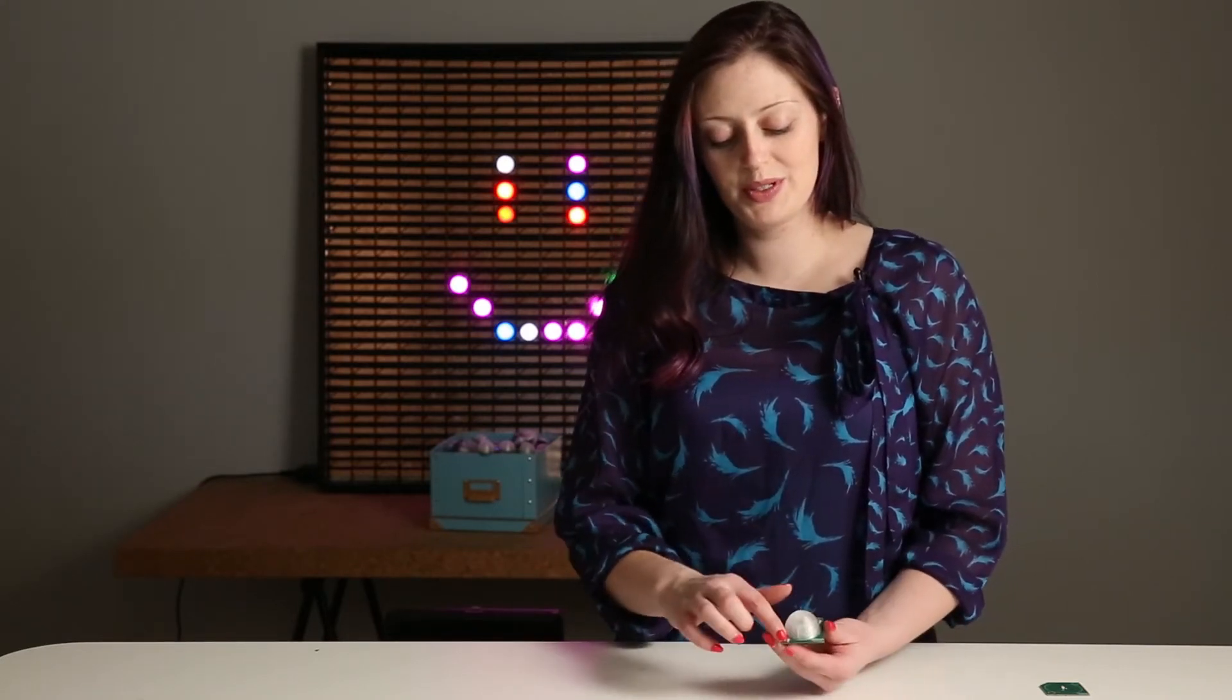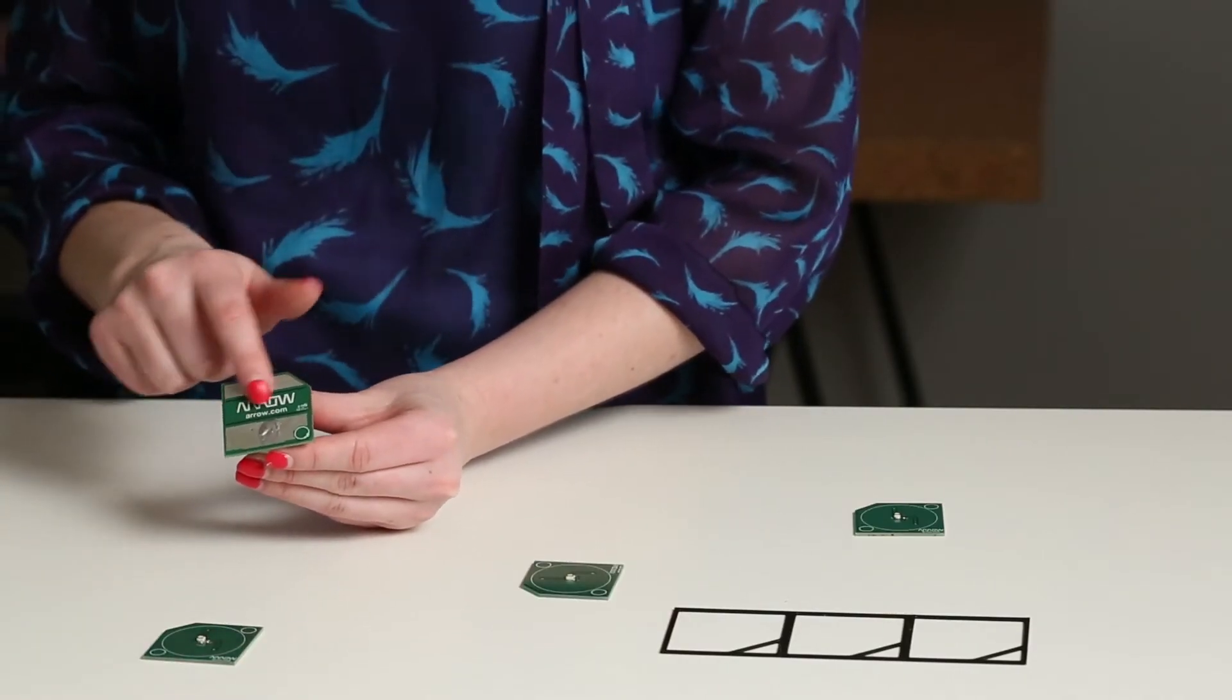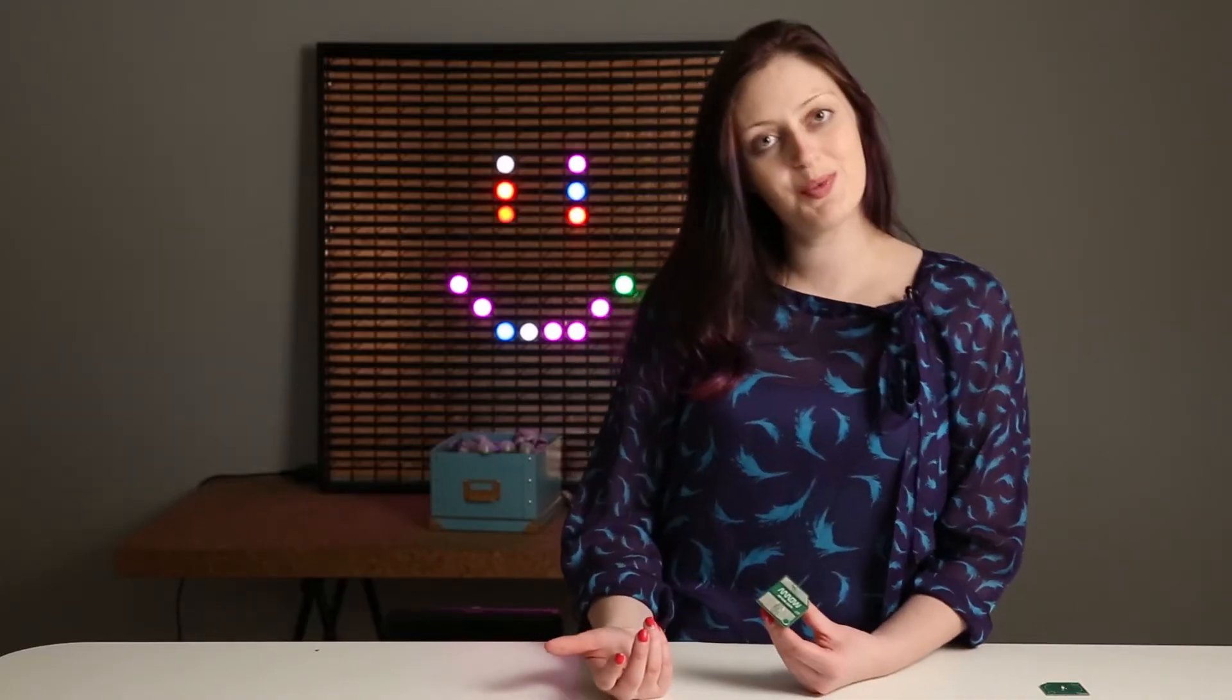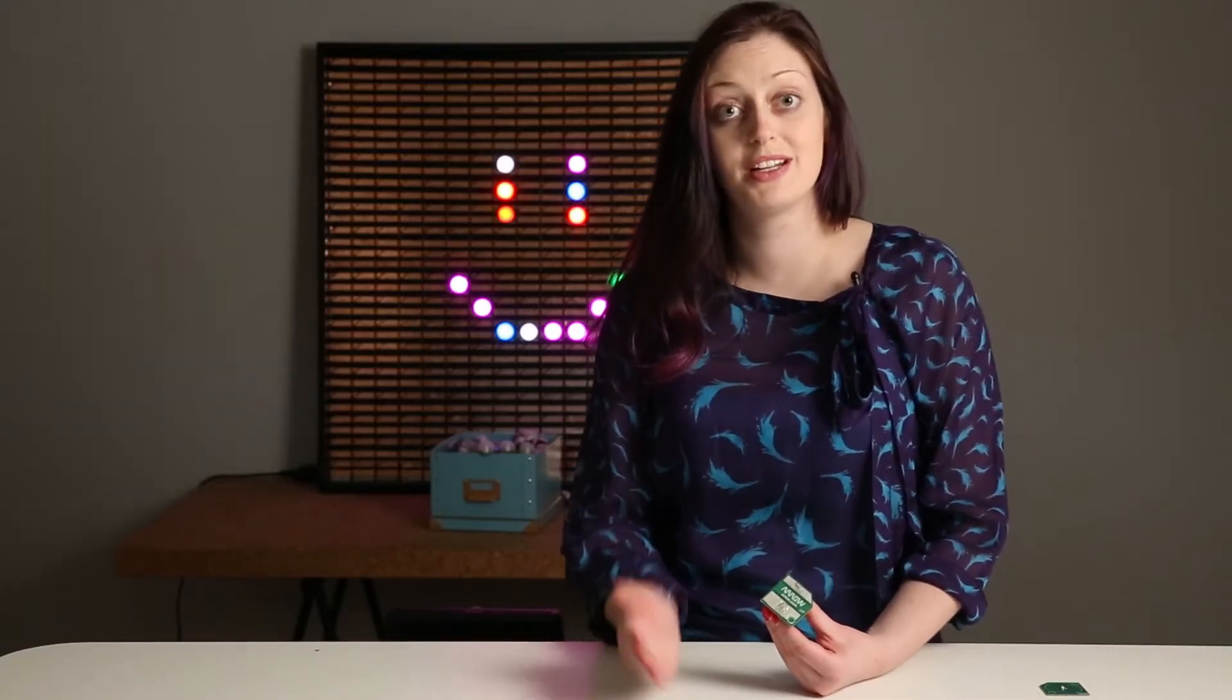We superglue those down and then on the back, to make sure that there's a good contact, we smear a little bit of solder using a soldering iron on both of the plates. I was hoping we could get away without doing this, that there would be enough ripples in the copper to actually make contact.